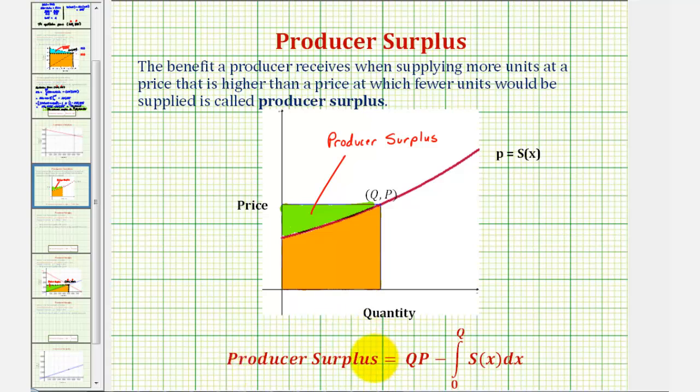Producer's surplus is equal to q times p minus the integral of s of x from zero to q. So we're finding the area of this rectangle here, which is q times p, and then subtracting the area under the supply function from zero to q, leaving us with producer's surplus.